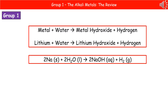One of the key things we need to do is write both word and balanced symbol equations for the reaction of alkali metals with water. The general word equation is: metal plus water makes metal hydroxide and hydrogen. Substituting in lithium as our example: lithium plus water makes lithium hydroxide plus hydrogen. Remember, if the exam asks for a word equation, write the full words — don't use chemical symbols, otherwise you're throwing away marks.